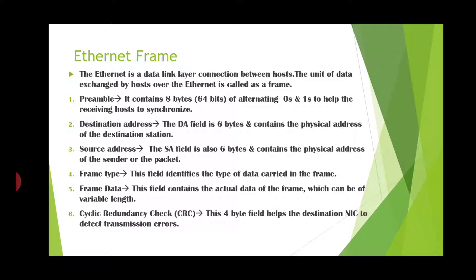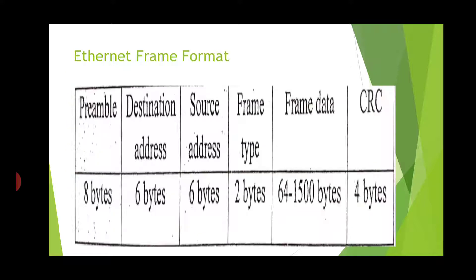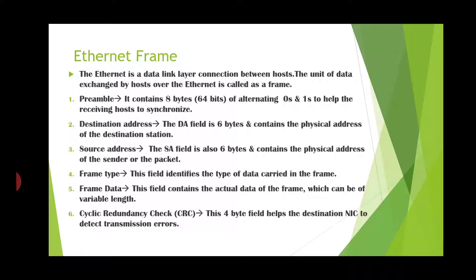Frame type — this field identifies the type of data carried in the frame. Frame data — this field contains the actual data of the frame, which can be variable length. CRC (cyclic redundancy check) — this 4-byte field helps the destination NIC detect transmission errors. On this topic you are getting a 5-mark question, where you must explain all the fields along with the frame format diagram.